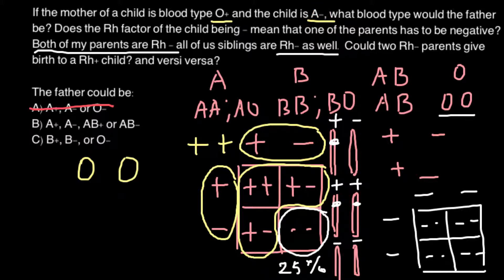And of course, if the father were BB genotype or BO genotype, such two parents also would not be able to produce a child of phenotype A. So we can also cross out answer C. But all the variants present in answer B can produce progeny who is going to be A negative.